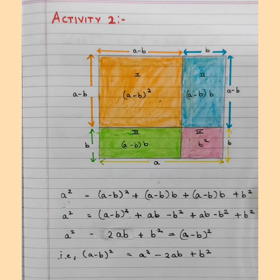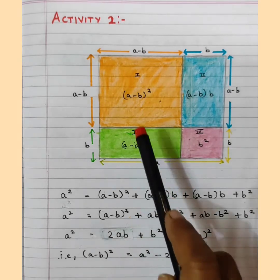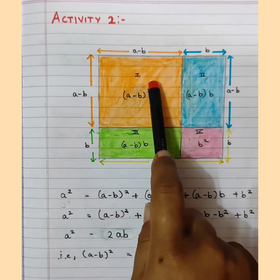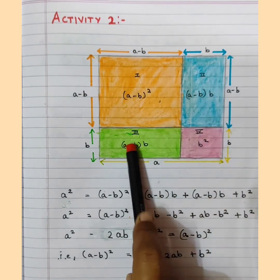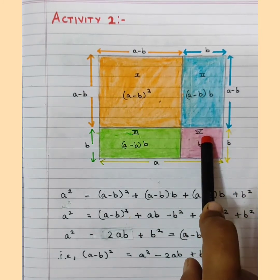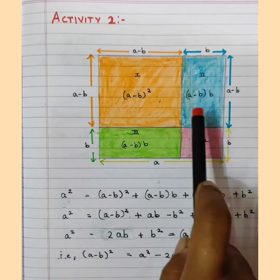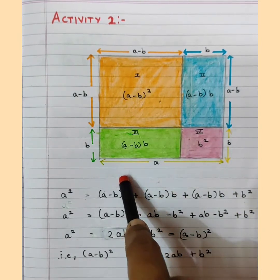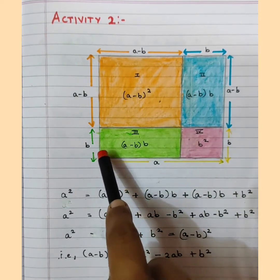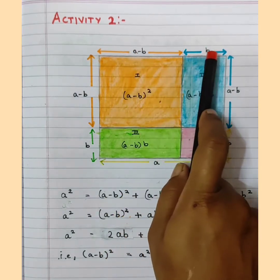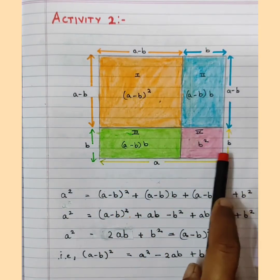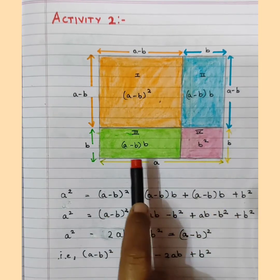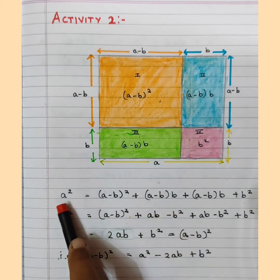Activity 2. Here also there is a quadrilateral divided into 4 rectangles: first, second, third, and fourth rectangle. The four sides of the quadrilateral are named A minus B, B, A minus B, and B. The full side is termed as A, so the total area is A square.